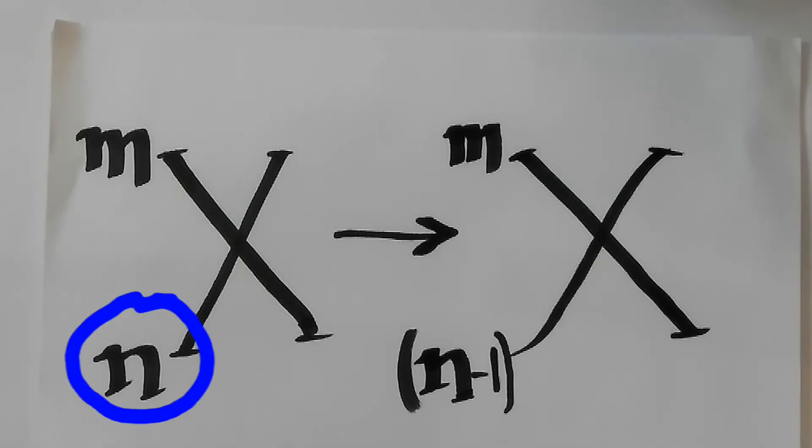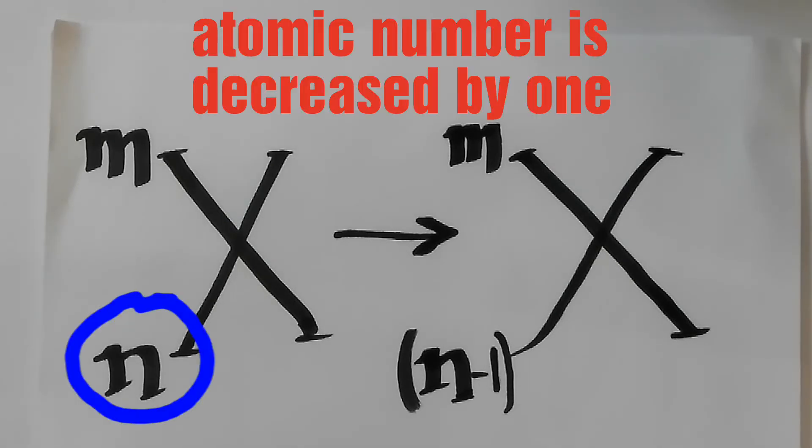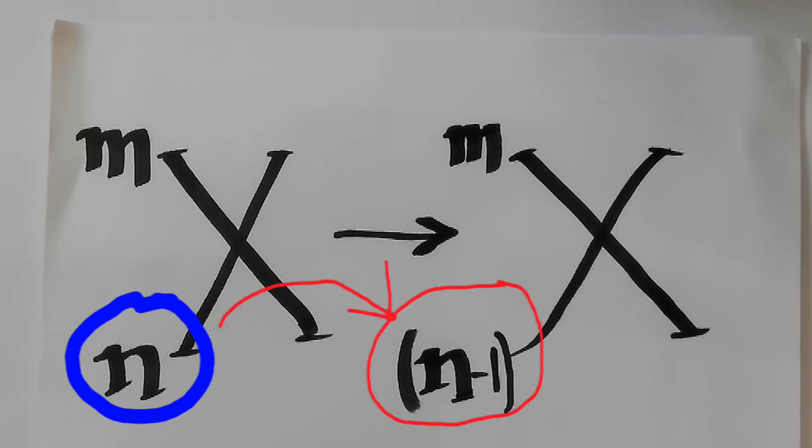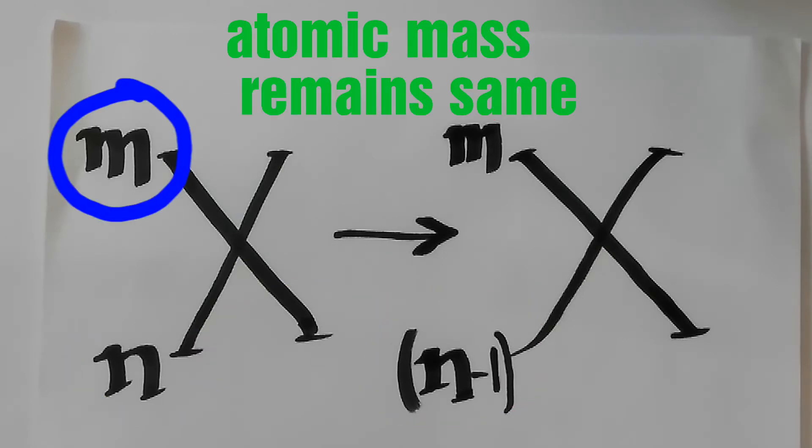During this change, the atomic number is decreased by 1 and the atomic mass number remains as it is.